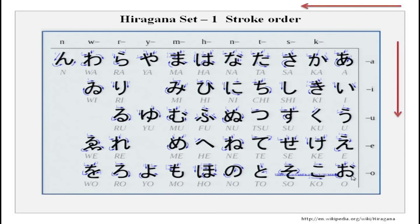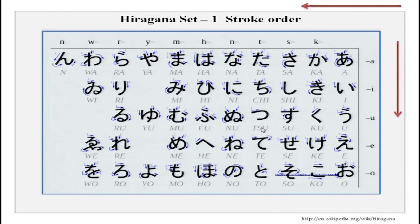Then we have the K series: joining K with each vowel makes KA, KI, KU, KE, KO. Similarly for the S series: SA, SHI, SU, SE, SO. You will notice that this is an exception — the sound is not SI but SHI. Then we have the T series: TA, CHI, TSU, TE, TO. CHI and TSU are also exceptions. So you need to remember these three exceptions: SHI, CHI and TSU. Then the N series: NA, NI, NU, NE, NO. And the H series: HA, HI, HU, HE, HO. Then the MA series: MA, MI, MU, ME, MO.